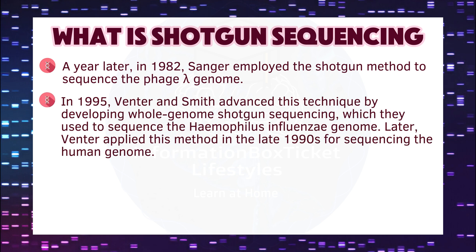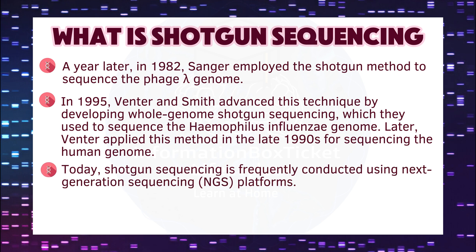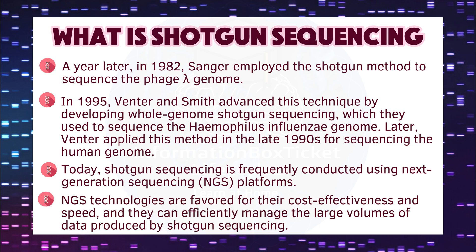In 1995, Venter and Smith advanced this technique by developing whole-genome shotgun sequencing, which they used to sequence the Haemophilus influenzae genome. Later, Venter applied this method in the late 1990s for sequencing the human genome. Today, shotgun sequencing is frequently conducted using next-generation sequencing (NGS) platforms.